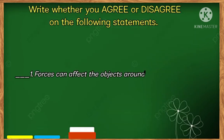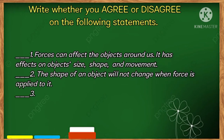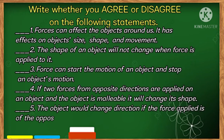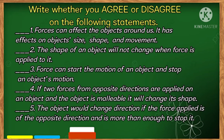Let us now check your understanding. Write whether you agree or disagree with the following statements. Number 1: Forces can affect the objects around us — it has an effect on object size, shape, and movement. Number 2: The shape of an object will not change when force is applied to it. Number 3: Force can start the motion of an object and stop an object's motion. Number 4: If two forces from opposite directions are applied on an object and the object is malleable, it will change its shape. Number 5: The object would change direction if the force applied is in the opposite direction and is more than enough to stop it.